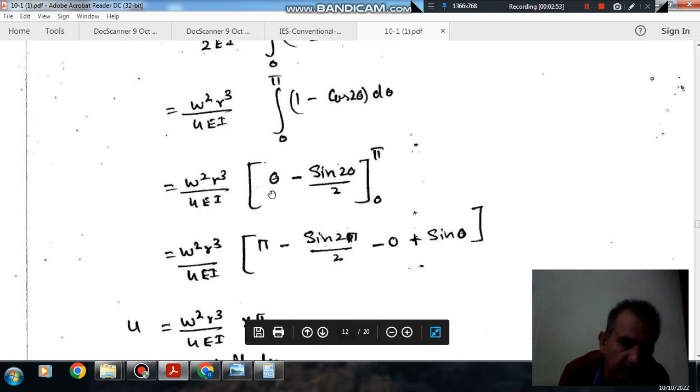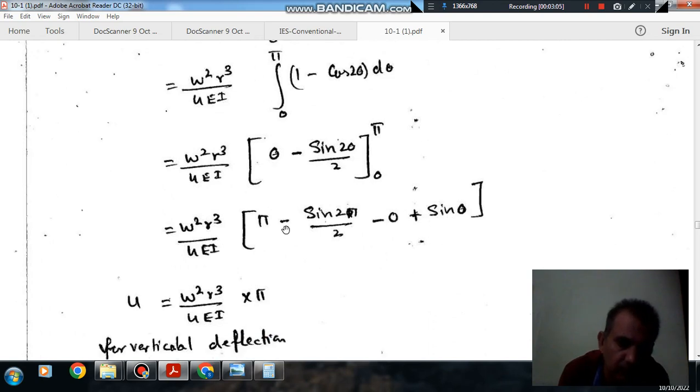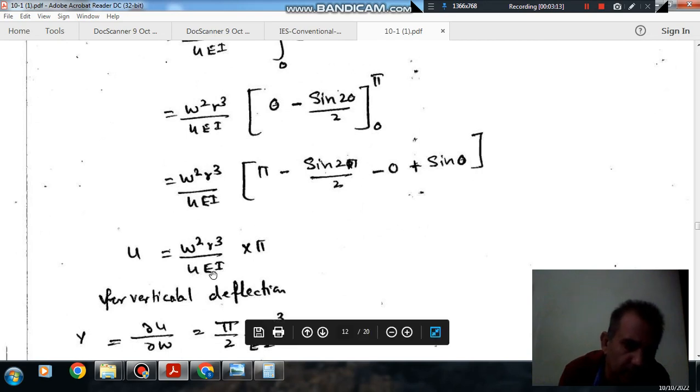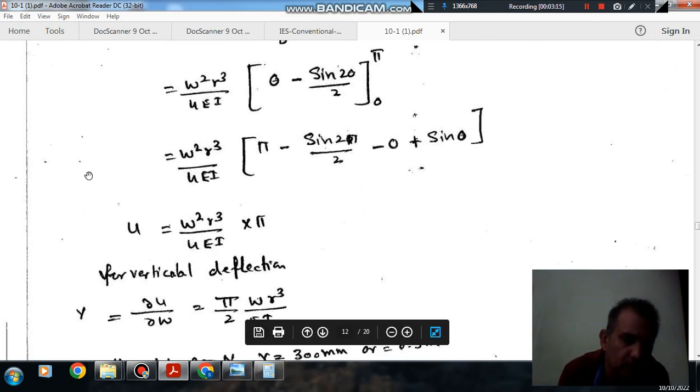Integration is theta minus sin 2 theta by 2. And limits are pi to 0. If you put the limit then it will be pi and this will be sin 2 pi by 2, which is 0. And this is also 0. So the strain energy comes out as W square R cube over 4EI into pi.